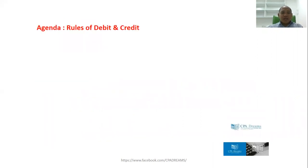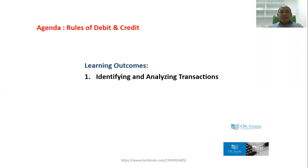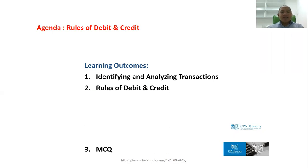So our agenda today: rules of debit and credit. This is going to be used from the first year until the end of your accountancy degree, even at the time of your work or job. Our learning outcome: identifying and analyzing business transactions and events, rules of debit and credit. And I'm going to give some multiple choice questions.